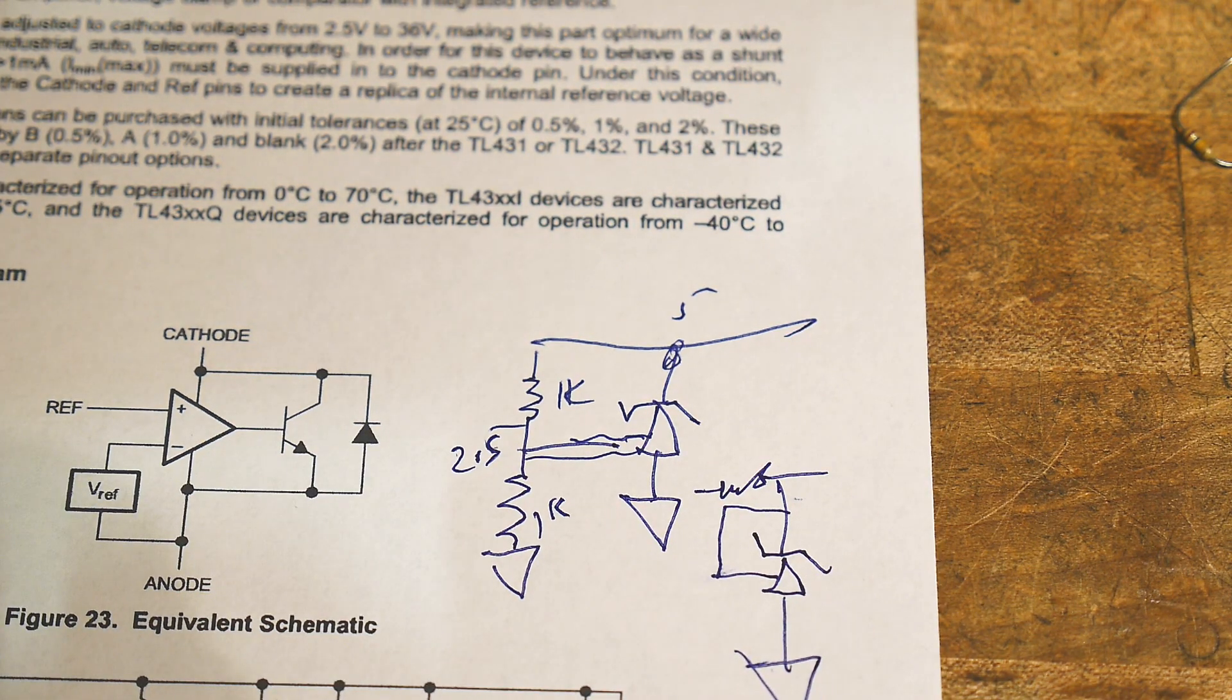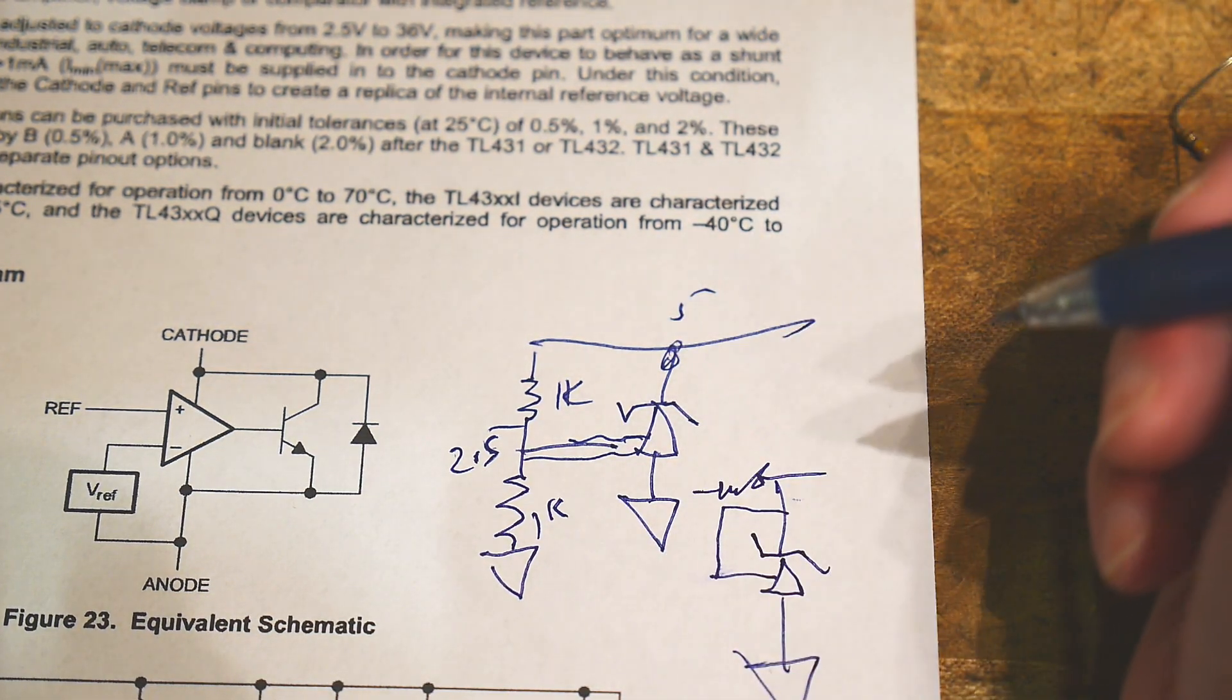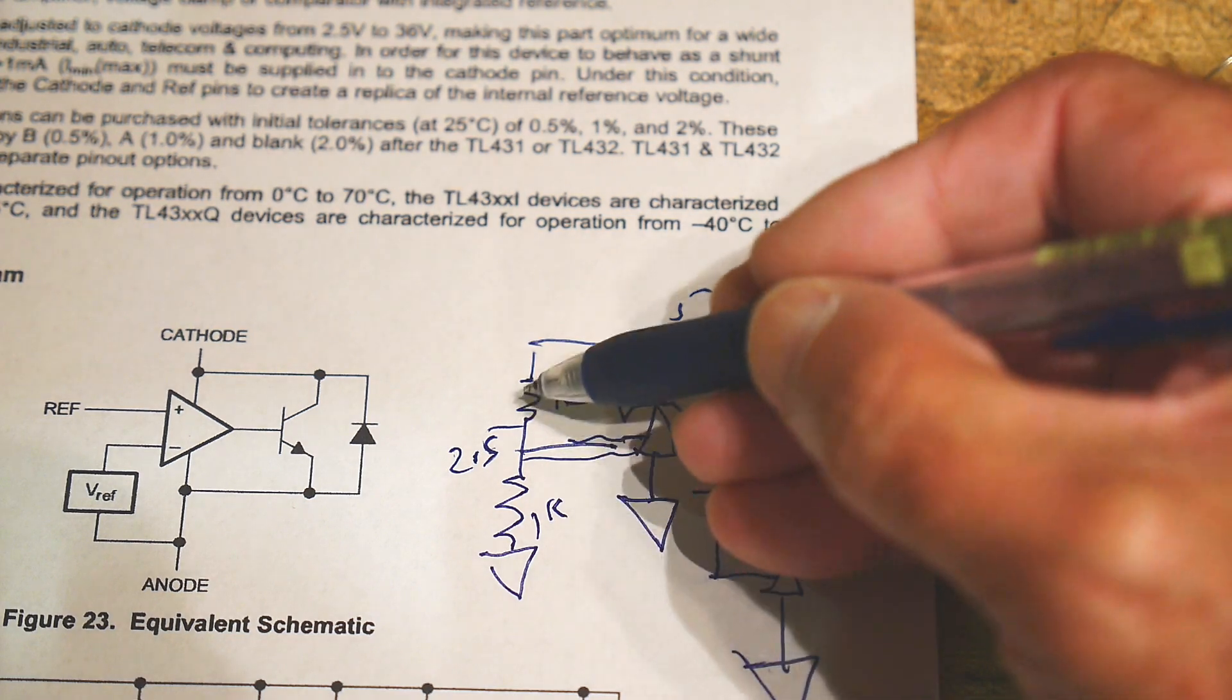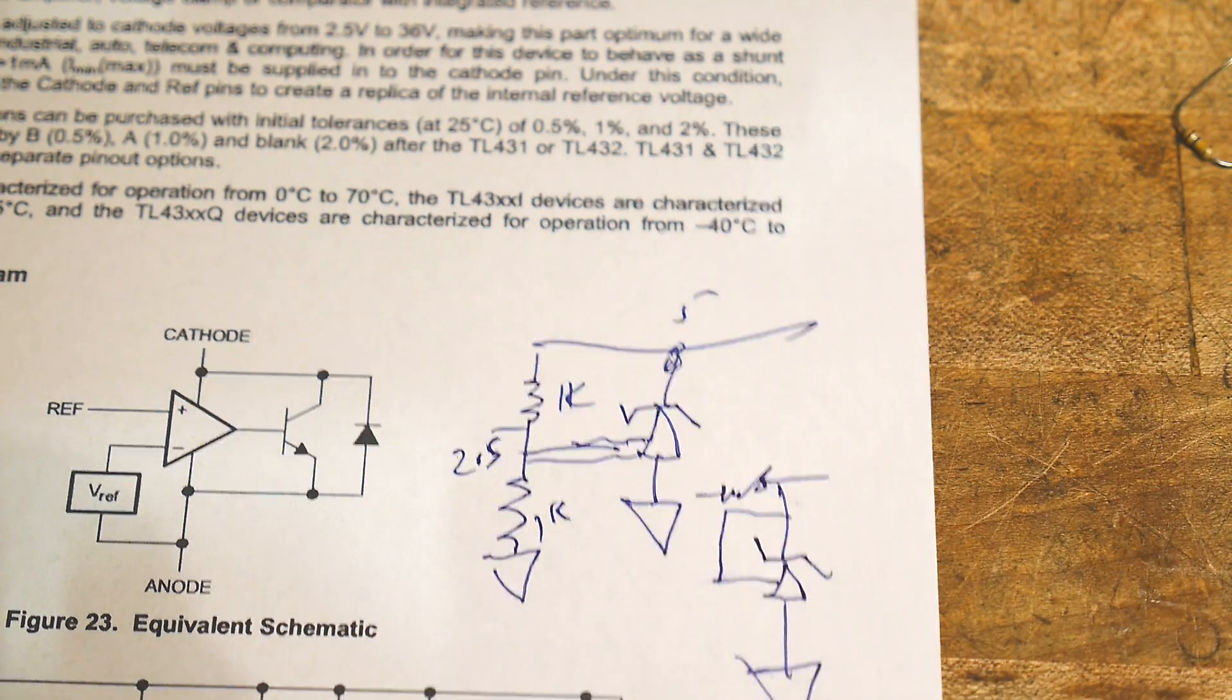If I want to make 4V, then I would choose these two resistors such that the output is 4V. It'll be a little bit different than 1K1K. Let's start somewhere.